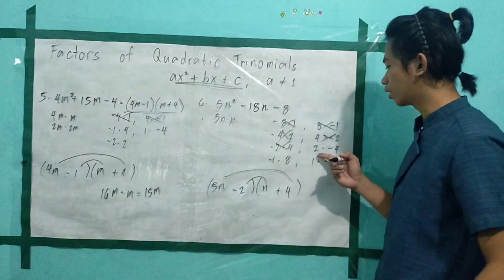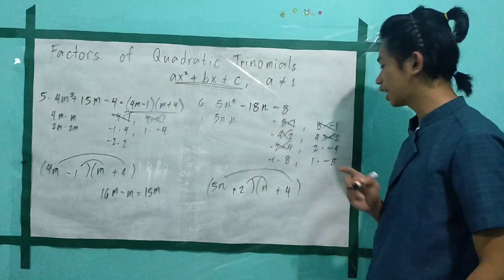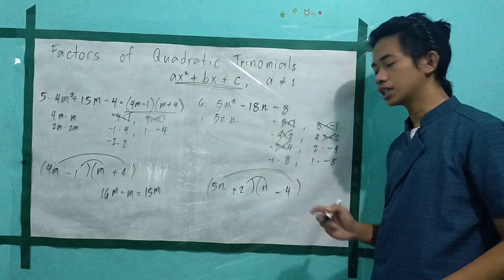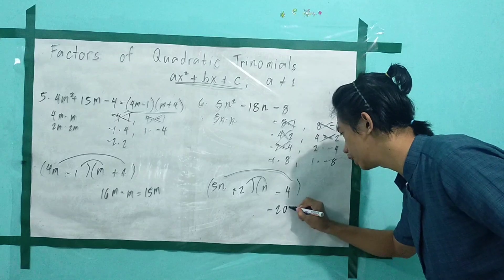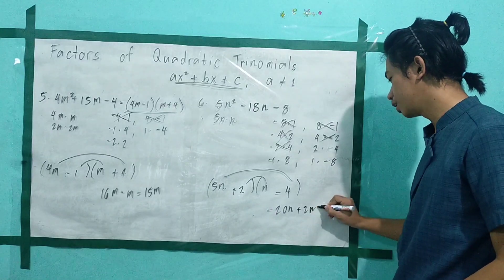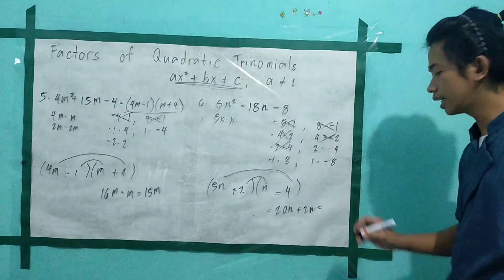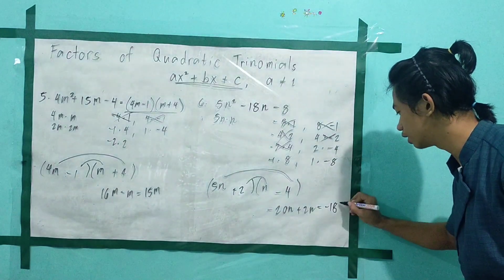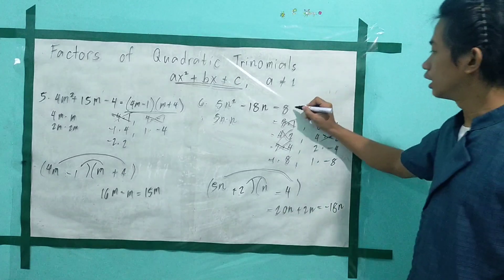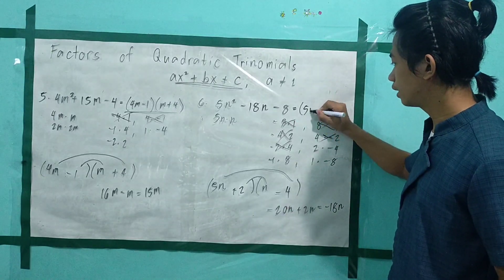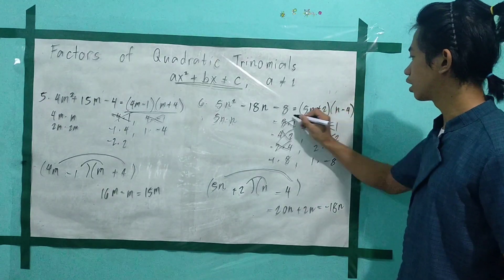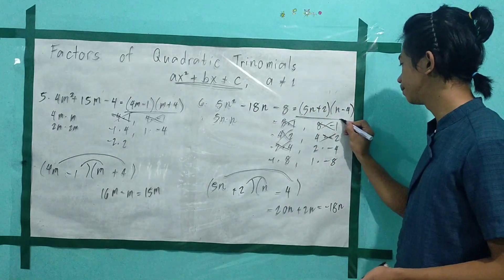Try (5m + 2)(m − 4): 5m times negative 4 gives negative 20m, and 2 times m gives positive 2m. Sum is negative 20m plus 2m, which equals negative 18m. Same as our middle term? Yes. Therefore, the factors are (5m + 2)(m − 4).